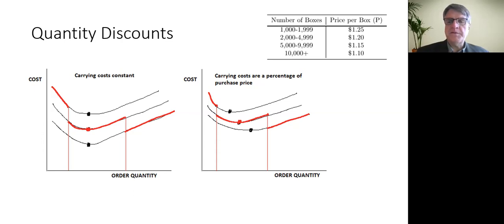There are two types of carrying cost situations at work. The first is explained in this first graph where carrying costs are constant and sort of independent of the price of the good, which is going to vary with the discount, and then a situation where carrying costs are a percentage of the purchase price.